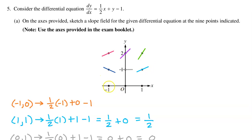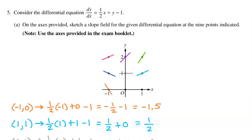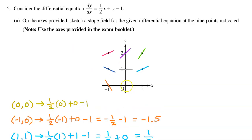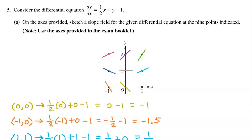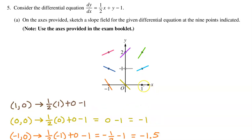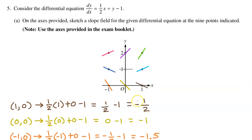At (-1, 0), we have one-half times negative 1 plus 0 minus 1. This equals negative 1.5, so draw a decreasing slope steeper than a 45-degree angle. At (0, 0), we have one-half times 0 plus 0 minus 1, which equals negative 1, so decreasing at a 45-degree angle. At (1, 0), we have one-half times 1 plus 0 minus 1, which is negative one-half, so decreasing but not as steep as a 45-degree angle.